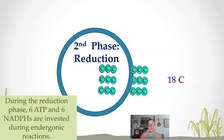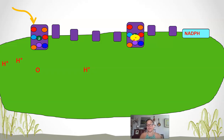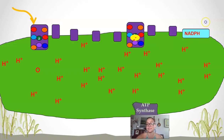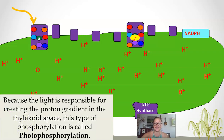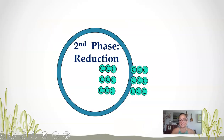Then we invested some ATP, we used the electrons and hydrogens from NADPH, and now that NADPH from the electron transport chain of the light reaction has been oxidized. So remember, we made our ATP during the light reaction.